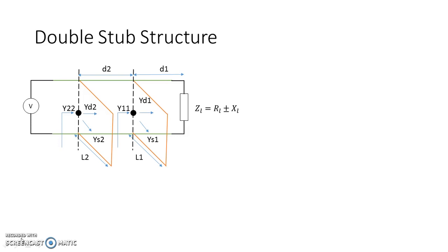From circuit theory, since YD1 and YS1 are parallel they add, giving Y11 = YD1 + YS1 and Y22 = YD2 + YS2. We note that instead of Z0, we now work with admittance Y0, so we need to match to Y0.